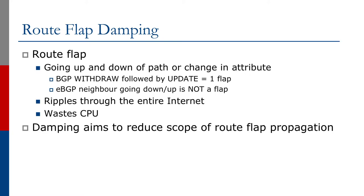These route flaps ripple through the entire internet, so it's not just a local feature. A withdraw of a prefix is seen globally unless policy gets in the way, and the update is seen globally as well. Suddenly, operators far away from where the prefixes are flapping see CPU being used for reasons they cannot control and that are not relevant to them. Route flap damping was introduced to reduce the scope of route flap propagation.